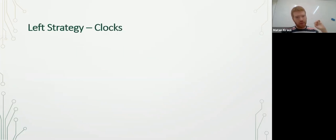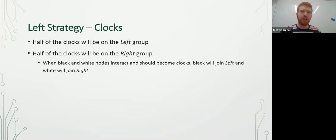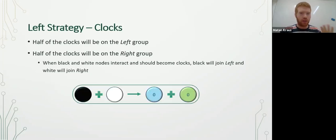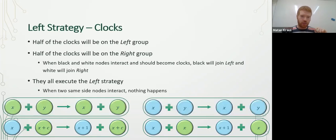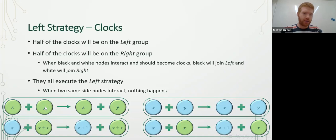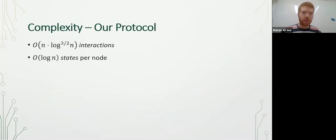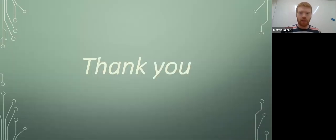The clocks will implement the left strategy: half the clocks will be in the left group and half in the right group. We do so by interactions of different-color nodes — black will be a left clock and white will be a right clock — and they all execute the left strategy. When two nodes from the same group interact, we just ignore this interaction. So when two left clocks with counters x and y interact, they stay with counters x and y. Overall, the complexity of the protocol is O(n log^{3/2} n) interactions and O(log n) states per node. Thank you very much for your attention.